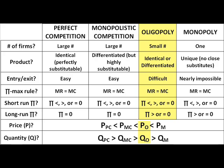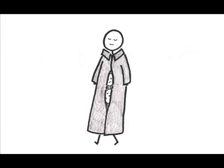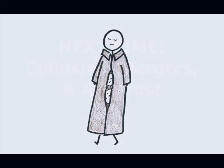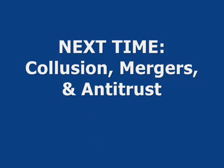In the next episode, we'll see what happens when the firms of an oligopoly get together and attempt to act like a single large firm, a monopoly, in order to boost their profits. Next time: collusion, mergers, and antitrust.